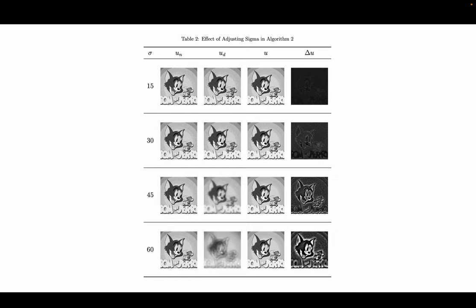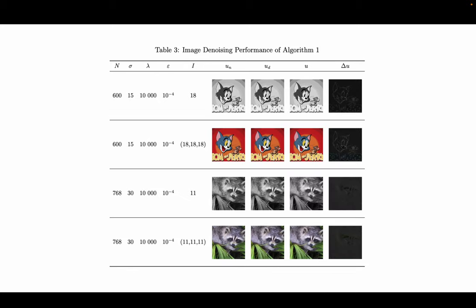And next, we have the effects of adjusting sigma in algorithm 2. Here, the original Gaussian noise added to the image is 30. As you can see, for values that are not equal to 30, there are a lot of artifacts visible here.